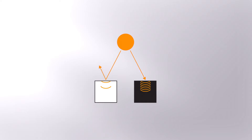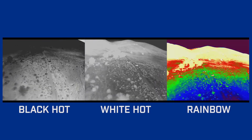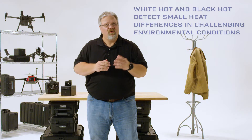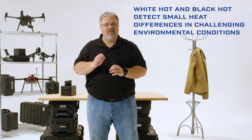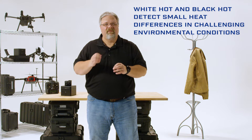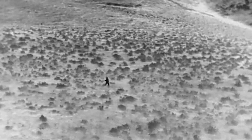There's enough of a difference that often one palette can reveal things you'd miss with the other. If you're looking at a scene that is heavily solar loaded, meaning that you're looking at objects that have absorbed a lot of solar radiation, it may be hard to make out subtle temperature differences in white hot because the scene looks washed out. But if you switch to black hot, things can be easier to make out. We shot the same comparisons in black hot and other color palettes, and black hot outperformed the others by far. So white hot and black hot should be your go-to choices when the detection of small, faint heat differences is your primary goal, or when operating in really challenging environmental conditions with lots of heat and humidity. They have been proven effective for decades in airborne search and rescue and other public safety applications.